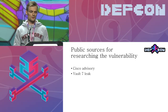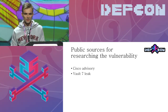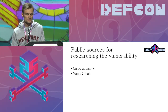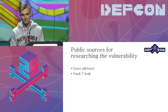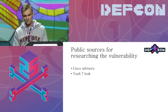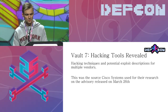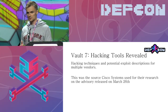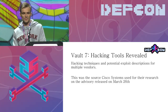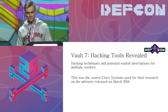The first thing I did was research all publicly available information about this vulnerability. Basically there are two things to look at: one is the Cisco advisory, and the other is the original source of information — the Vault 7 leak that happened in March 2017. That is actually the source Cisco Systems themselves used to learn about the vulnerability. This leak affected many vendors including Microsoft, Apple, and Cisco.